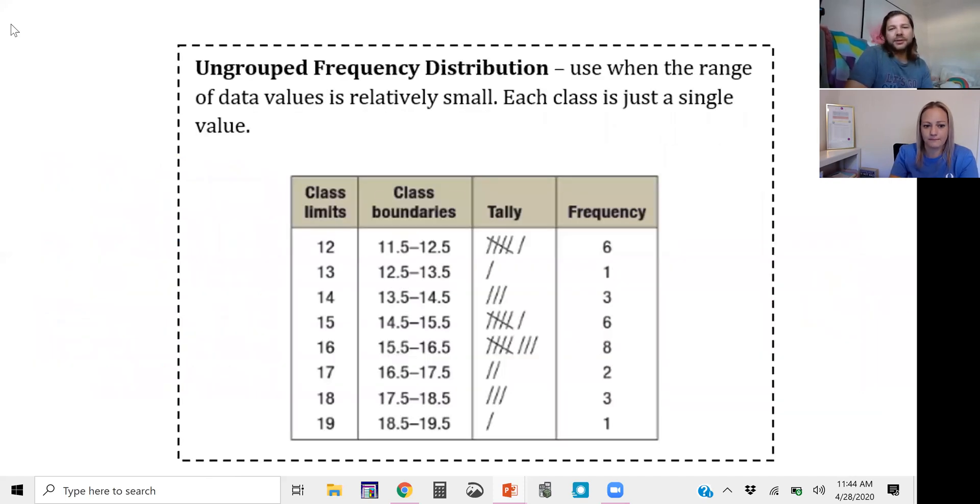All right, so ungrouped frequency distribution. This is when your range is so small that you basically only have one number per class. In this case you have 12, 13, 14, 15, 16, 17, 18, 19. We don't need to group these into classes because they're just basically one number.